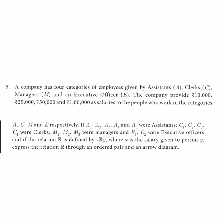If A1, A2, A3, A4, and A5 were assistants; C1, C2, C3, C4 were clerks; M1, M2, M3 were managers; and E1, E2 were executive officers; and if the relation R is defined by X R Y, where X is the salary given to the person Y — express the relation R through an ordered pair and an arrow diagram. This is a lengthy question, but it is very easy.